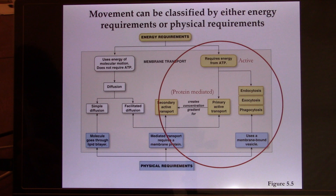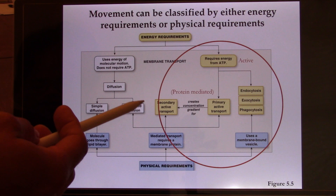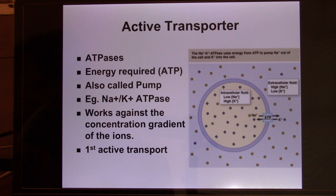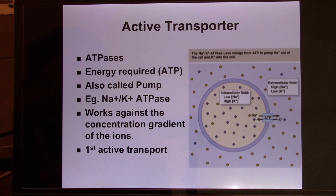Now let's focus on this part. The cell uses ATP as an energy source to move the molecule against the concentration gradient — from a low to a high concentration area. This won't naturally happen, so you need to give them biological energy, which is ATP. It can be divided into primary and secondary active transport. The primary active transport is called a pump, also called ATPase, because this membrane protein requires ATP as an energy source.